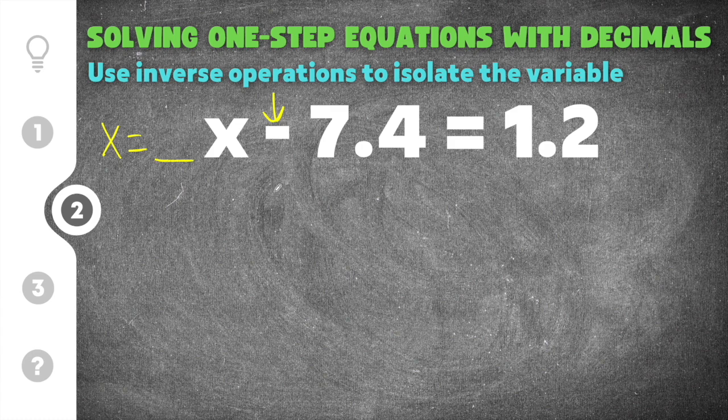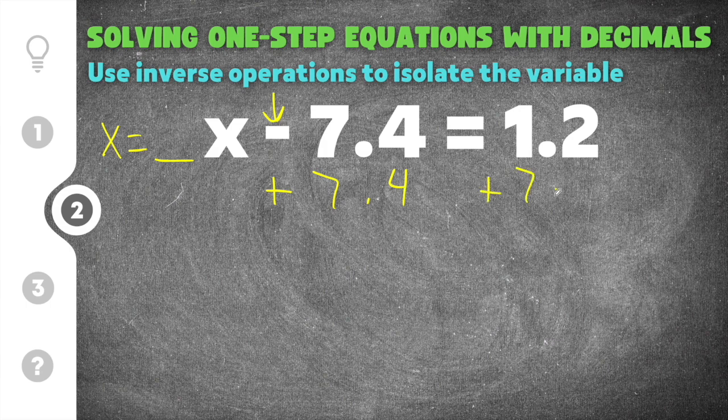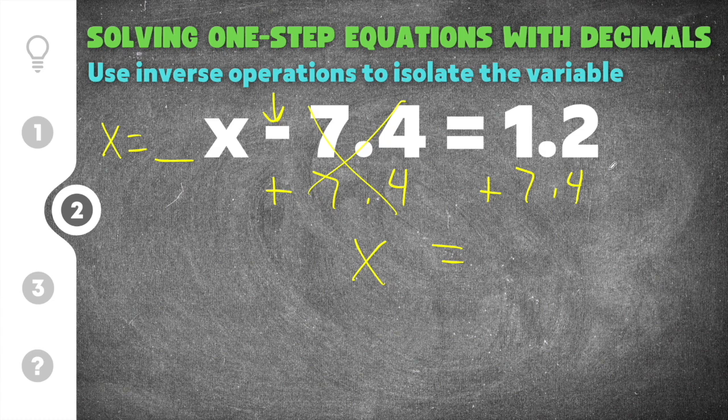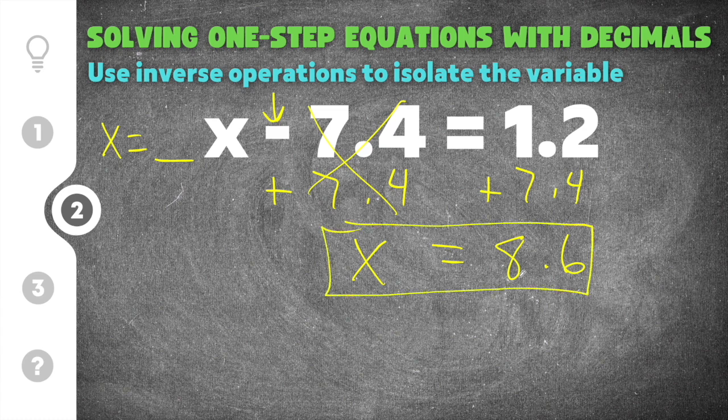So we have to get rid of this minus 7.4. So I'm going to do plus 7.4 here. And whatever you do to one side you also have to do to the other. So I'm going to do plus 7.4 here. Now the minus 7.4 and the plus 7.4 cancel and they go away. And we have just x on this side which is what we want. And then on the right side you have 1.2 plus 7.4. And when you add those or when you simplify those you will get 8.6. So our solution is x equals 8.6. So that's the answer to this equation.